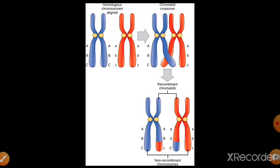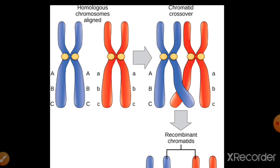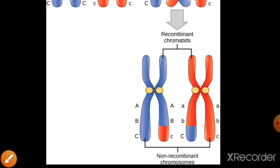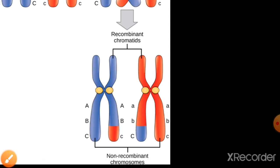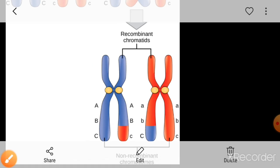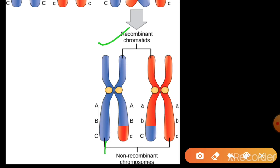This diagram shows the genes located on the chromosomes. Homologous chromosomes one and two each have two sister chromatids. Chromosome one has genes capital A, capital B, capital C, and chromosome two has small a, small b, small c. After crossing over between non-sister chromatids, new combinations are formed. The outer two are parental chromatids, and the inner two with combinations like A, B, small c and small a, small b, capital C are the recombinant chromatids.